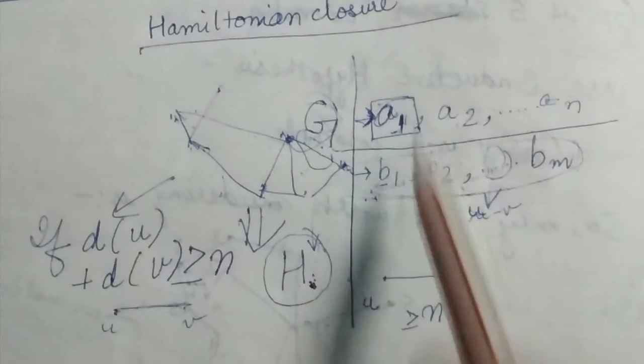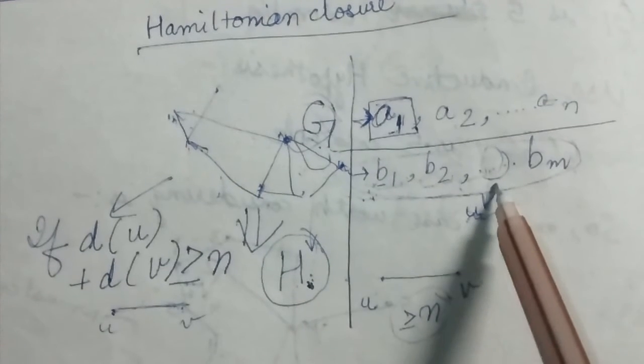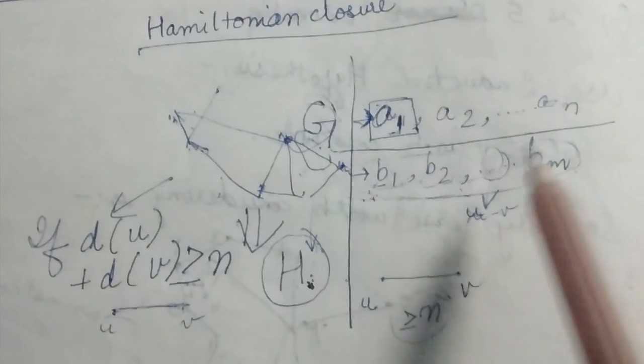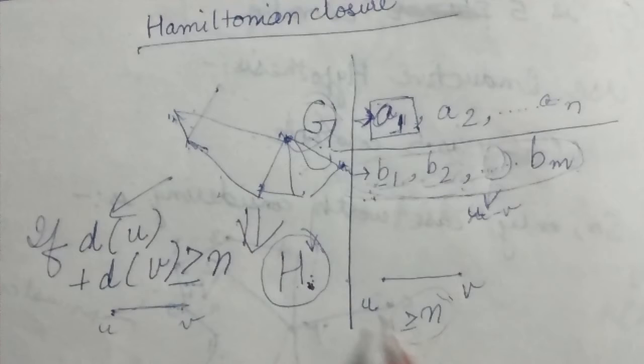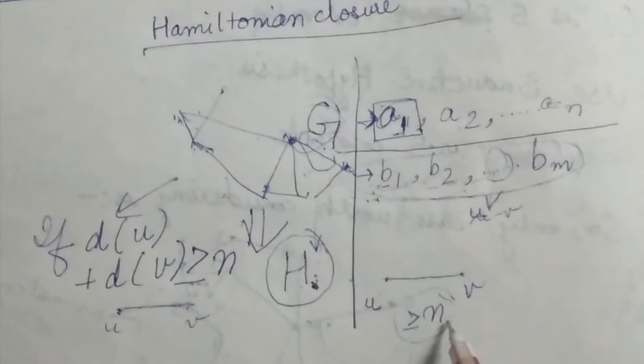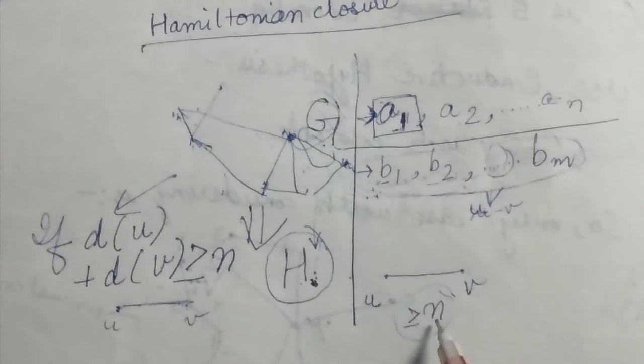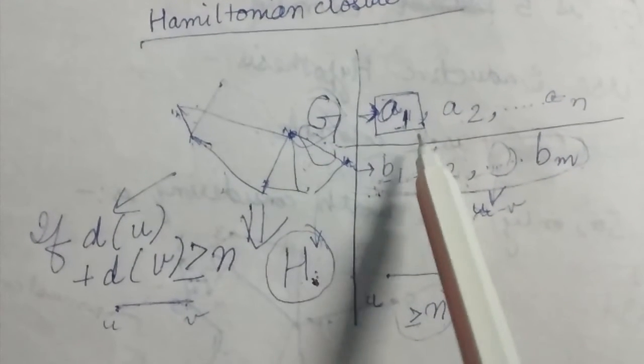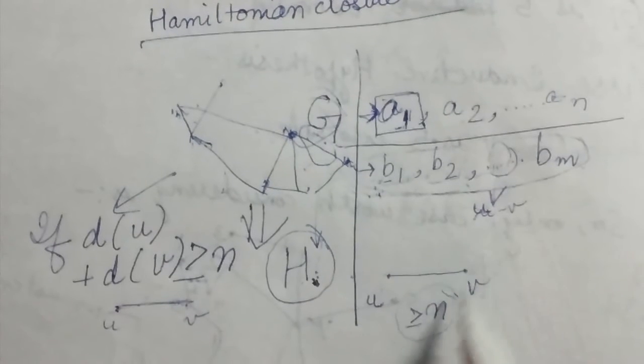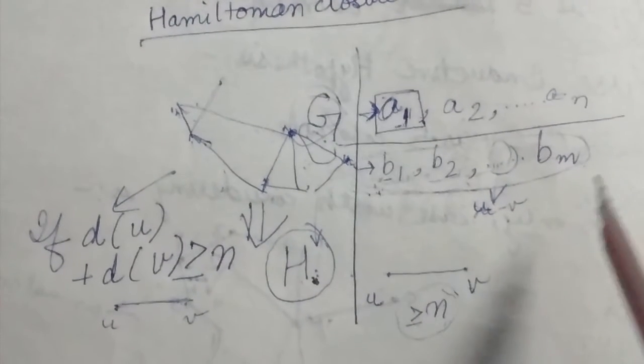Why? Because the degree in the beginning is greater than or equal to n. After adding some edges, I am just increasing the degree. I can never decrease the degree. So the sum of degrees is still greater than or equal to n, maybe more. So I must add this edge u, v at some later point.